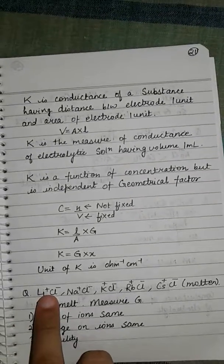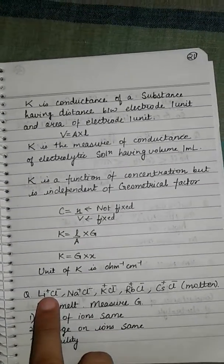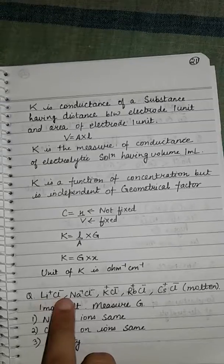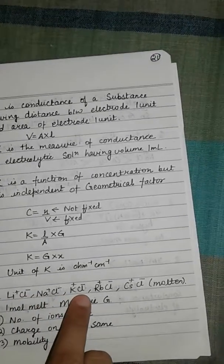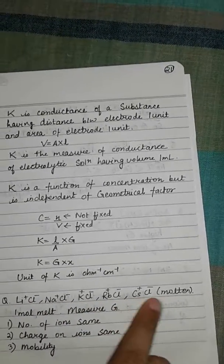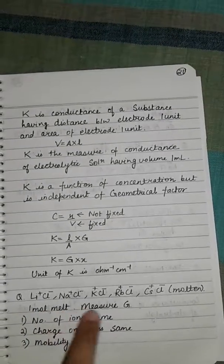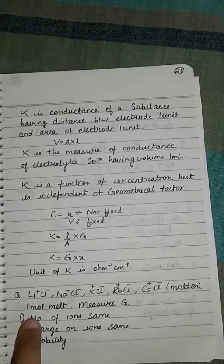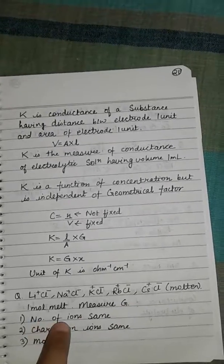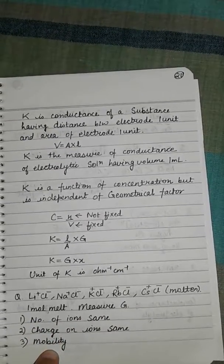Now let's discuss four simple questions on conductance. For examples, lithium chloride, sodium chloride, potassium, rubidium, and cesium chloride are given. For one mole, measure the conductance. Conductance depends on three things: number of ions, charge on ions, and mobility.